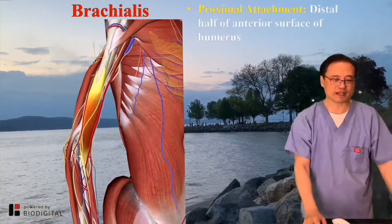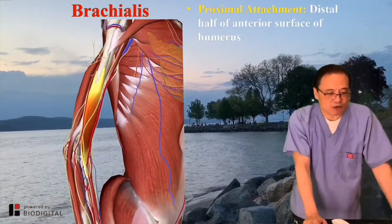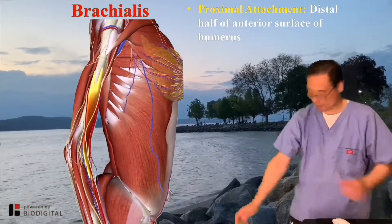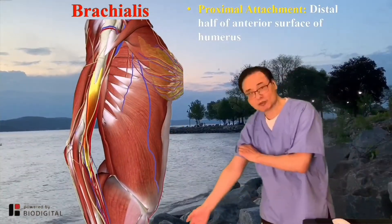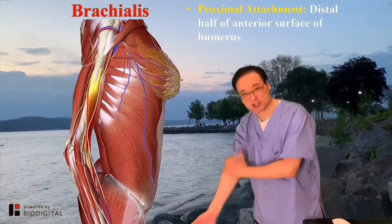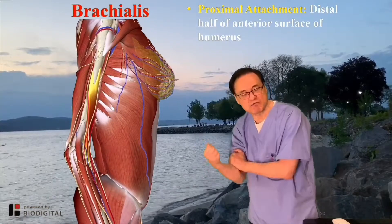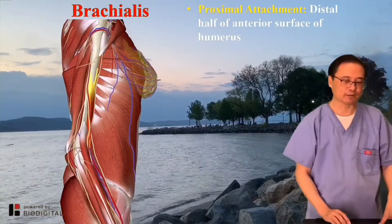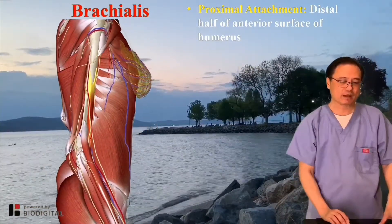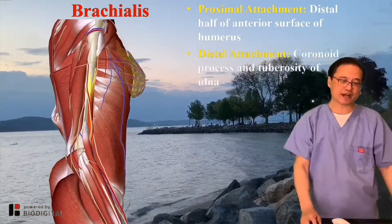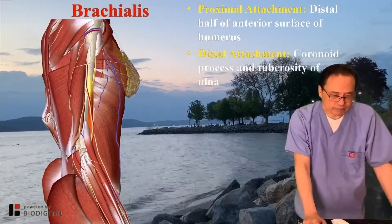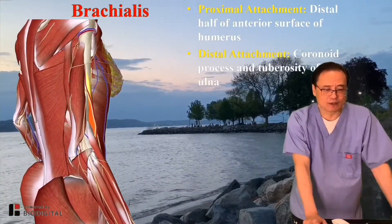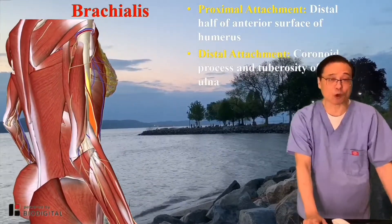The proximal attachment is the distal half of the anterior surface of the humerus, basically from distal, really focused on the elbow. The distal attachment is the coronoid process and the tuberosity of the ulna.